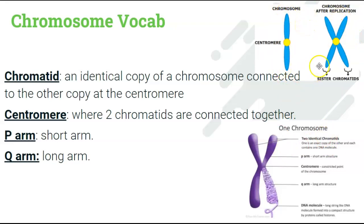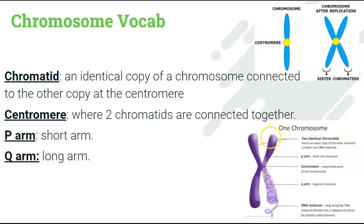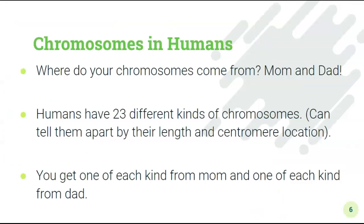The parts above and below the centromere are called arms. The P arms are the short arms, typically on top. The Q arms are the long arms, on the bottom.